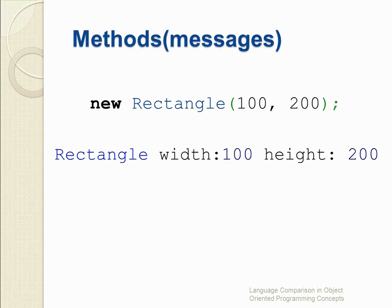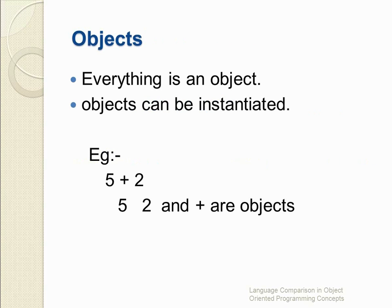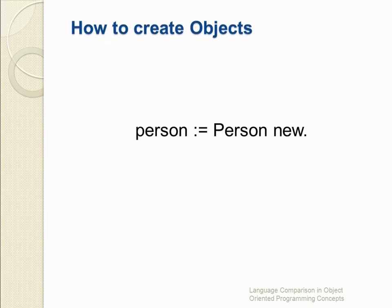Now let's move on to objects. As I mentioned before, in Smalltalk everything is objects. Even 5 + 2 is a collection of objects: 5 is an object, plus is an object, 2 is an object. Now let's see how to create an instance of our Person class. Notice that 'new' is a method on the Person class rather than a keyword in the language — it's simply an ordinary method that happens to be named 'new'. Unlike other languages, constructors in Smalltalk are nothing special; they are simply any method that happens to create and return an instance of a class.